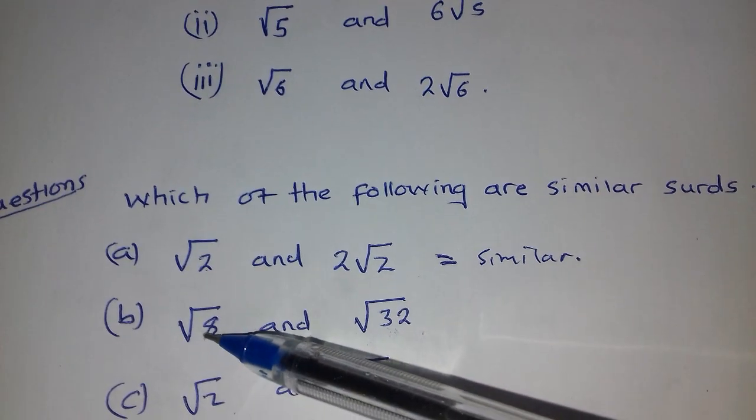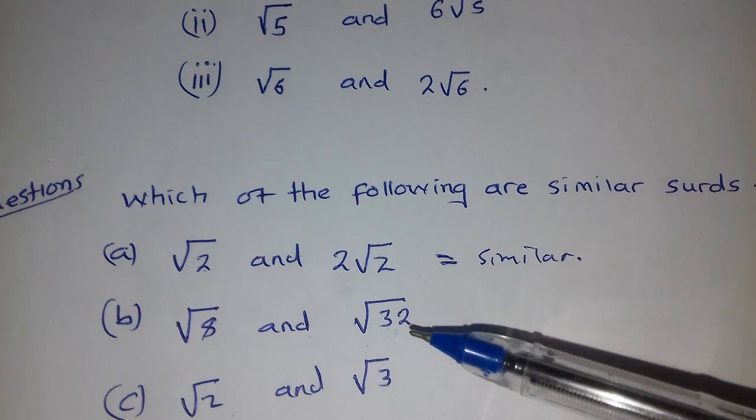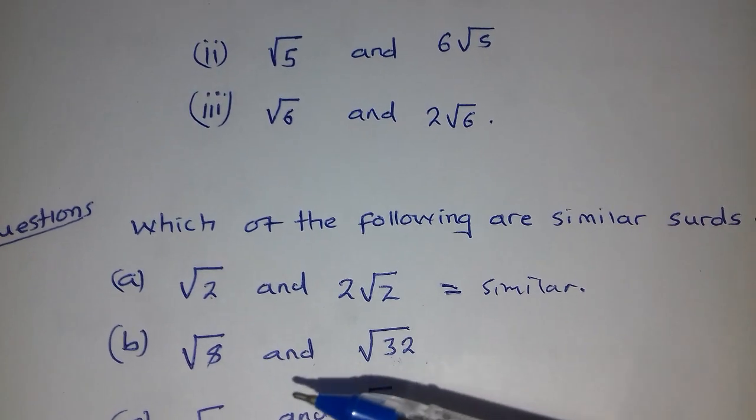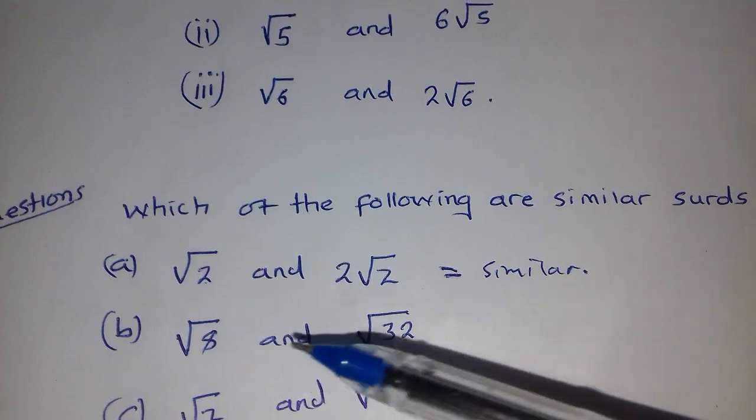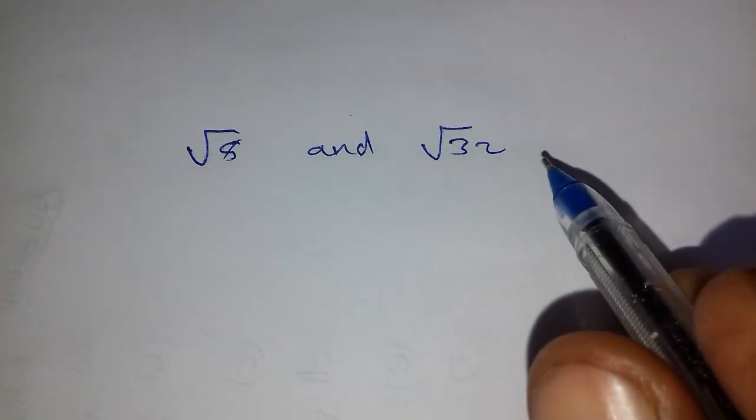Now what about this one, the square root of 8 and the square root of 32? Sometimes it is not always that you can identify similar surds by looking. So we have to get this one and this one, square root of 8 and square root of 32.